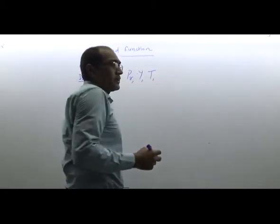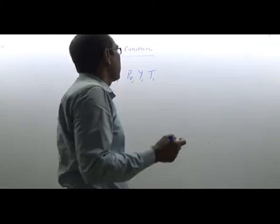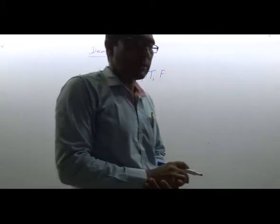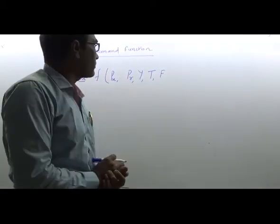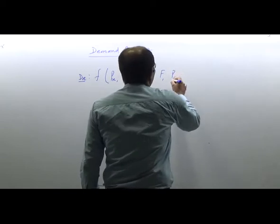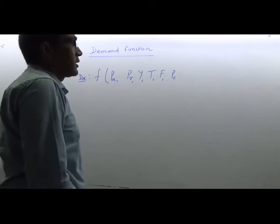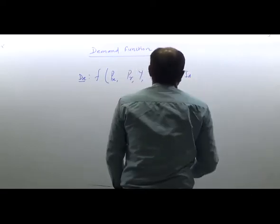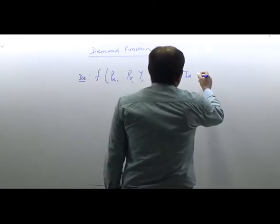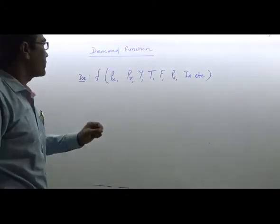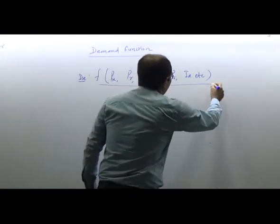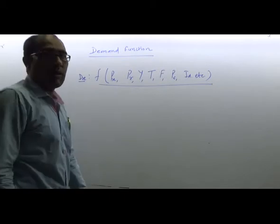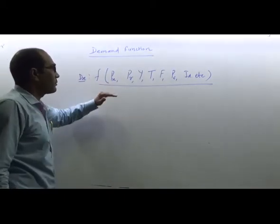The demand function also includes the expectation of the consumer regarding price of the product, population composition, income distribution. In that equation, DX — demand for good X — is the dependent variable, and it is a function of all these independent factors.